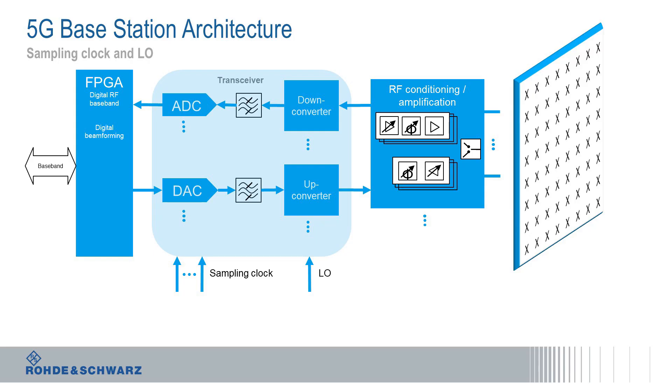Hello and welcome to our demystifying 5G video series. Today we will take a closer look at the clock and LO architecture in 5G base stations. A critical part here is a clock generator that feeds the sampling clocks in the data converter and also the local oscillator that is connected to the transceivers.